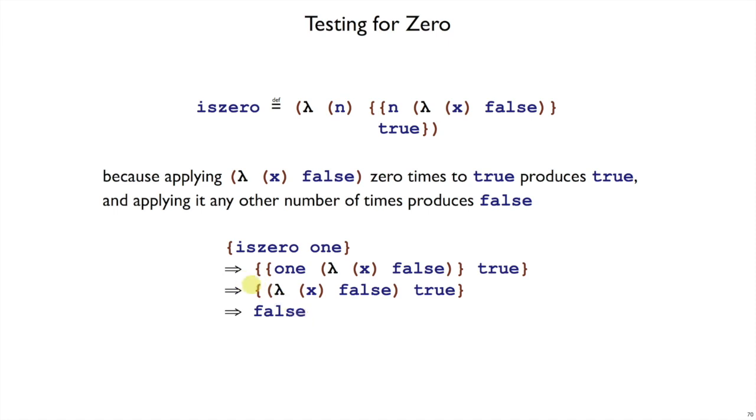And if you do 2, of course, there's just more lambda x falses wrapped around this. Now you may notice that testing is0 of 1,000, for example, will involve 1,000 calls to this function and it'll keep getting false every time. So it's not a very efficient encoding of numbers, but it is a possible encoding of numbers.